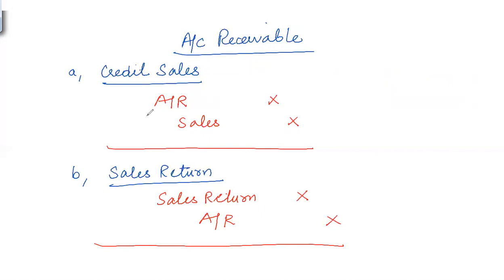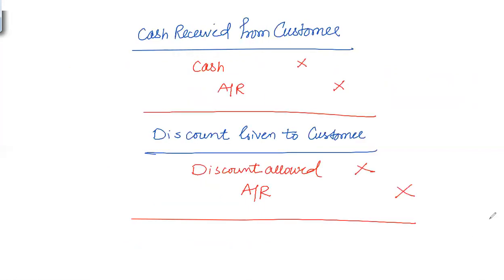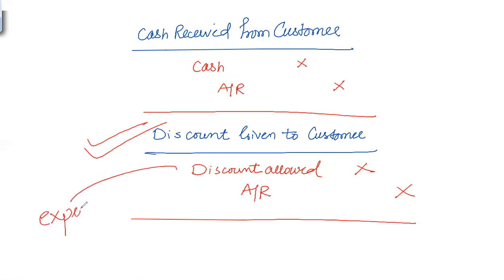When the customer returns goods due to defective products or other issues, we reverse this entry and debit Sales Returns and credit Accounts Receivables. When a customer receives a discount, we debit Discount Allowed as an expense and credit Accounts Receivables.